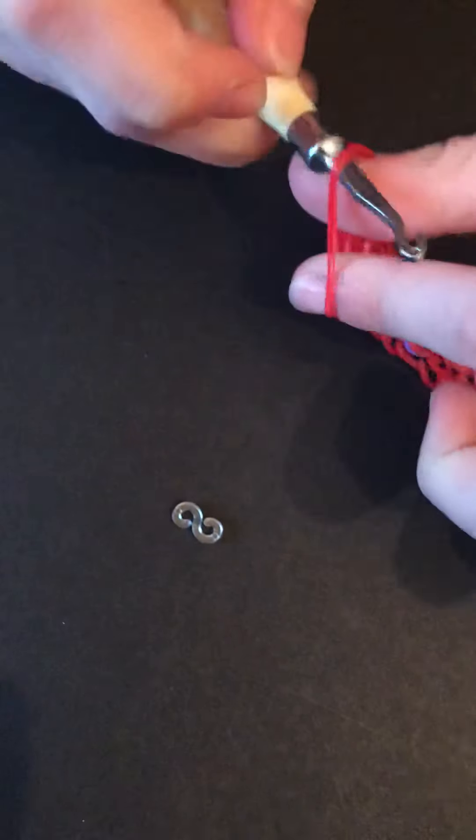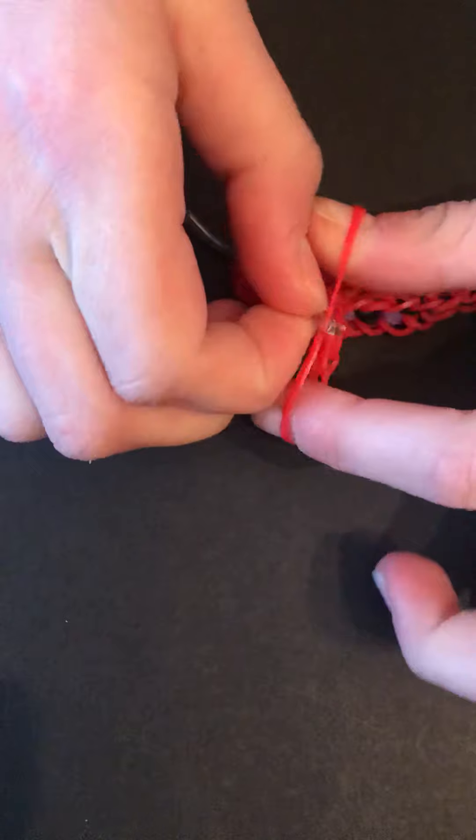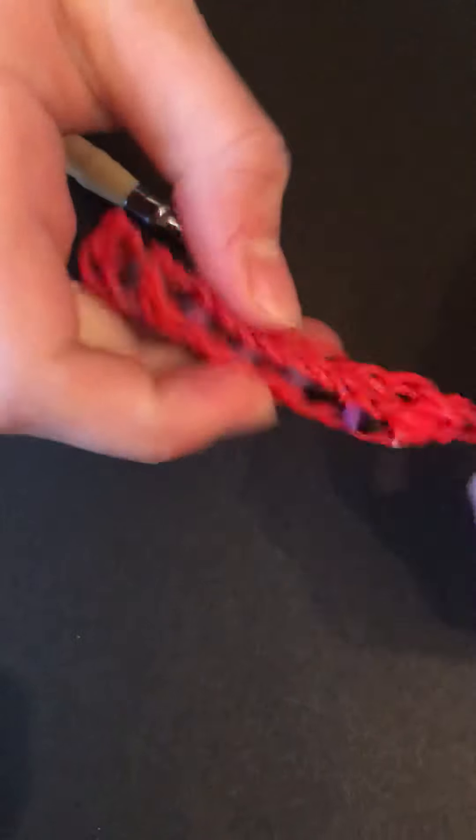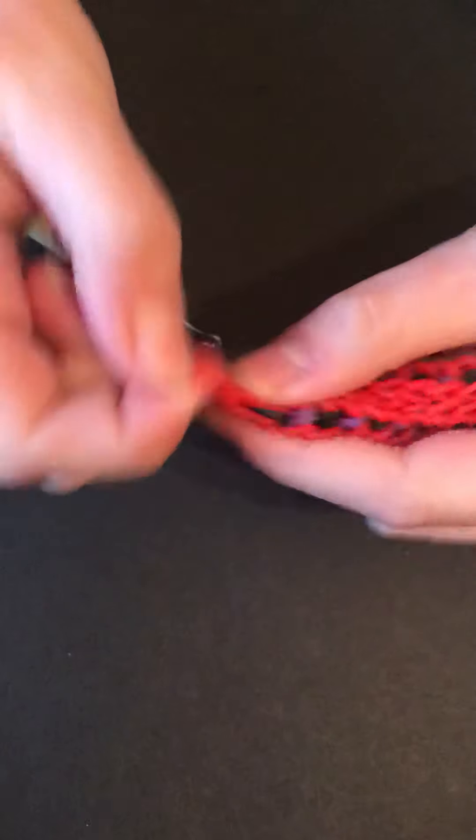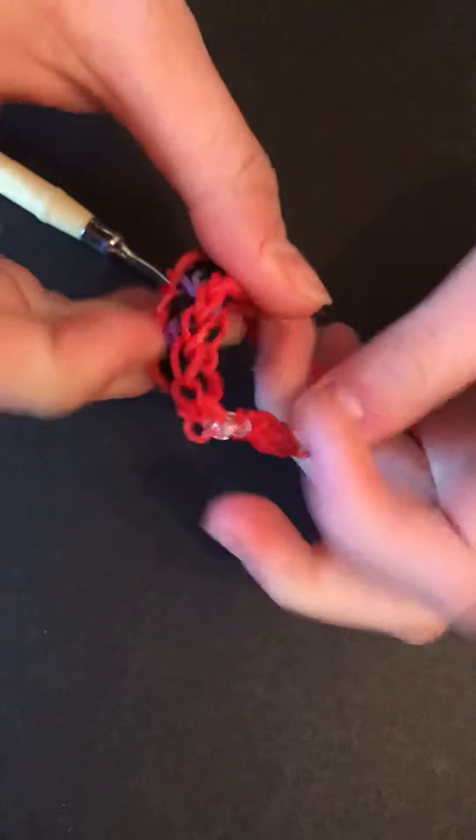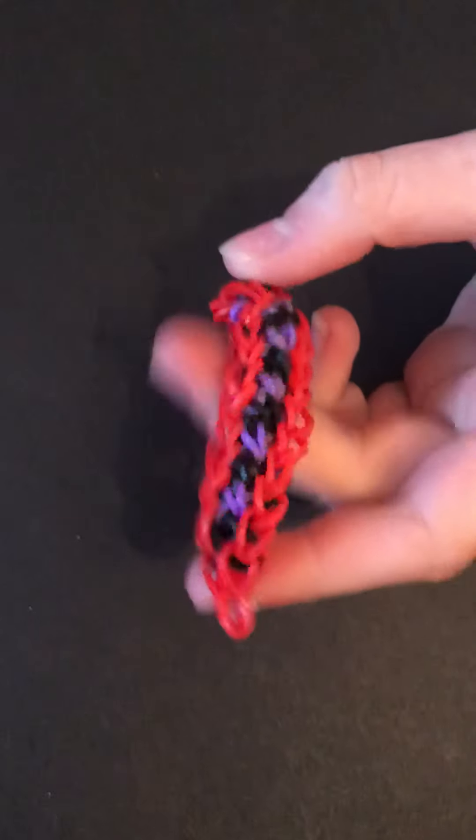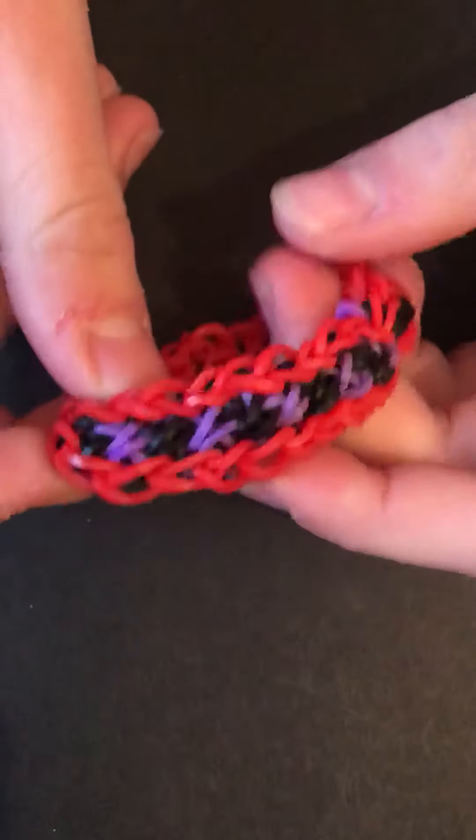Now take your S-clip or C-clip and you're going to stretch these bands out. Take your S-clip or C-clip, put it on those bands. Then find your cap band at the end of your bracelet and put those on also. And then you're done your twist bracelet.